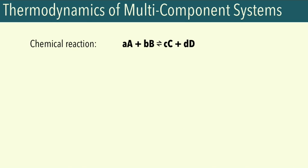To start off, we know that chemical reactions involve the transformation of one or more chemical species — the reactants — to form new chemical species — the products. Overall, in chemical reactions we typically have to deal with more than one chemical species in our system, so the system will ultimately be a mixture. We can describe this multi-component system with extensive properties dependent on convenient independent variables like temperature and pressure.